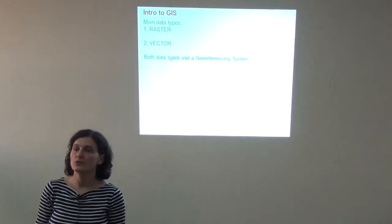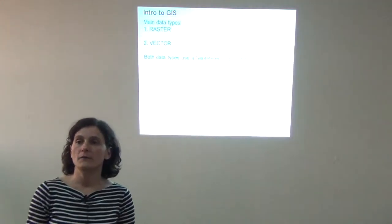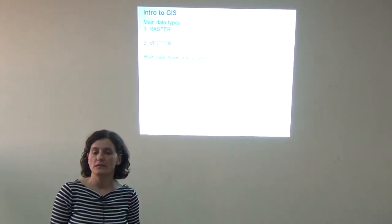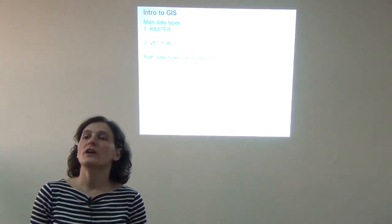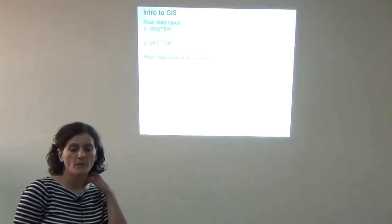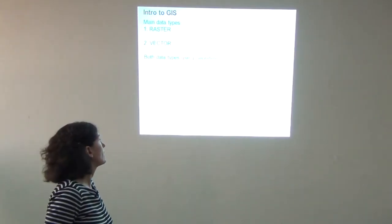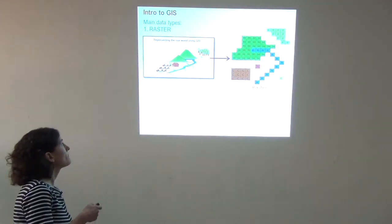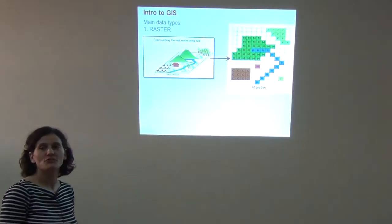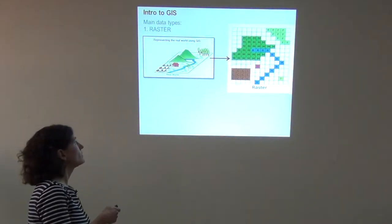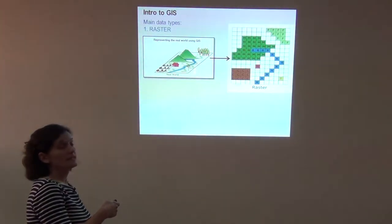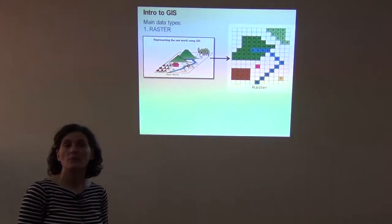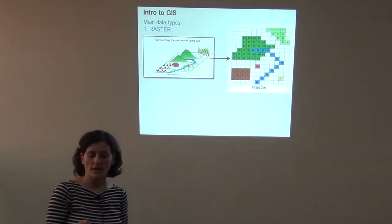The main data types used in any GIS system come in two forms: raster format and vector format. Both data types use a georeferencing system — a way of figuring out where in space our data are. So what I'd like to do is go over the two types. The first type is raster data. This is a simplified representation of the real world, just for illustrative purposes. Imagine we have a landscape in the real world and we want to convert it into a digital landscape in a GIS program.